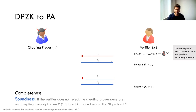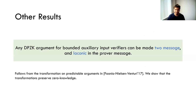When we discussed our positive construction, we showed there exist two-message DPZK, and this seems to be inherent: we also show in our paper that any DPZK argument can be collapsed into two messages. Even an arbitrary-message DPZK protocol can be collapsed into two messages and made extremely laconic in the prover message size. For soundness roughly one-half, it suffices for the prover to send a single bit. These results follow from transformations on predictable arguments by Farnio, Nielsen and Venturi, and we show their transformations also preserve zero knowledge as long as you start with a zero knowledge protocol.